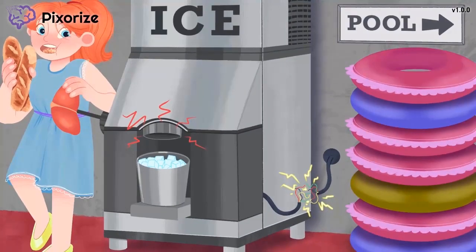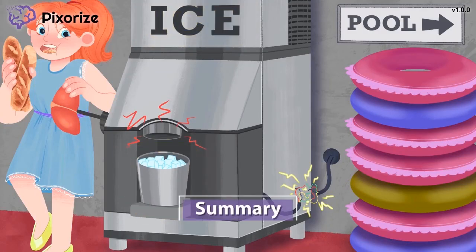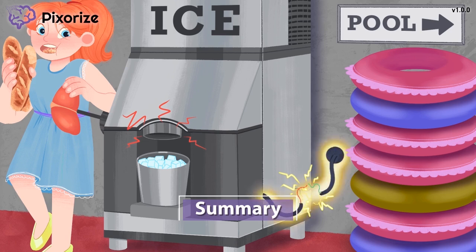Alright, that's it for isoniazid. Let's do a quick recap. Isoniazid is a medication used to treat tuberculosis. It can be used to treat both active and latent TB, as well as prophylactically for someone who has been exposed. Isoniazid is hepatotoxic, and it can also cause peripheral neuropathy, but that can be prevented with vitamin B6 supplementation.